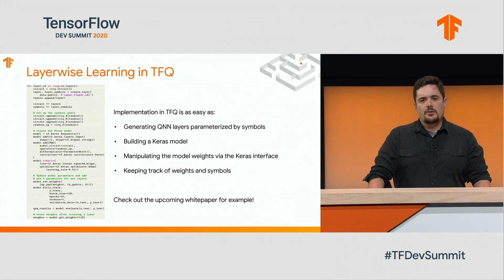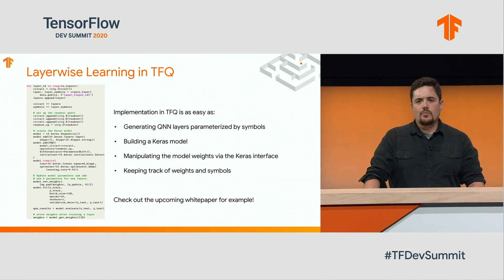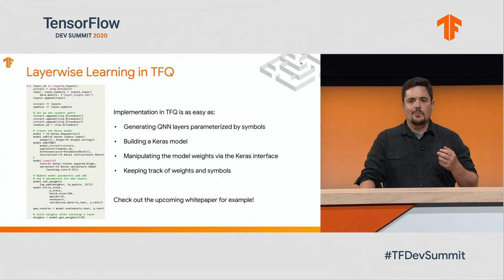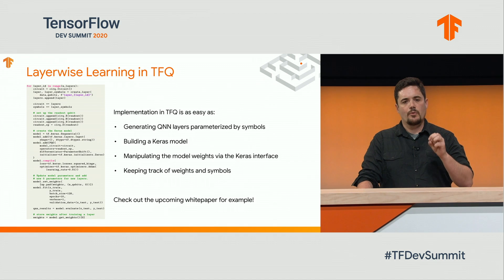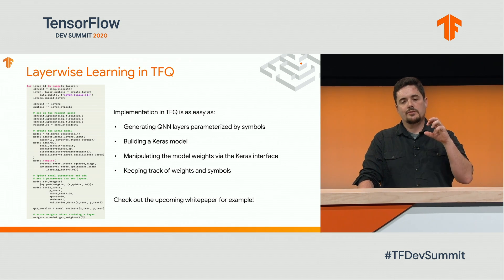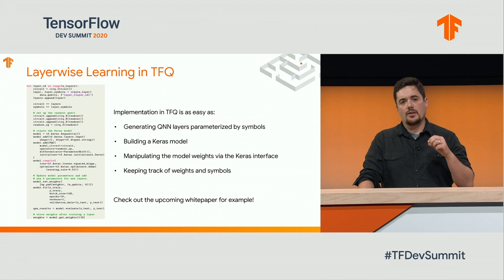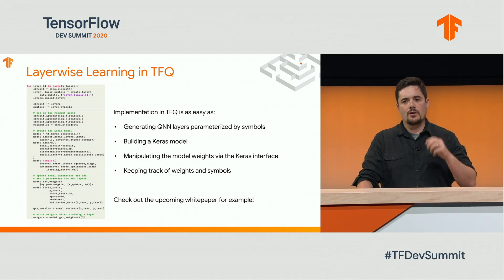To talk a little bit about TensorFlow Quantum: we can generate our quantum neural network layers really easily by using SymPy and Cirq to construct our circuit. Then we can inject that using a TFQ parameterized quantum circuit layer into TensorFlow Keras. We can use the TensorFlow Keras loss functions and optimizers to train the gradients for our parameters for our quantum neural network.